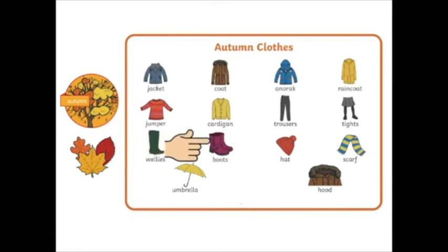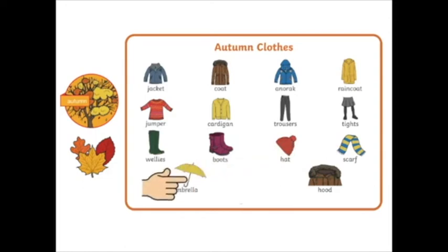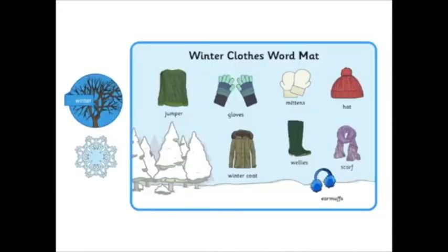Boots. Hat. Scarf. Umbrella. Hood — on a jacket. You might have a jacket with a hood. These are autumn clothes. In autumn it can be windy or rainy or cold.